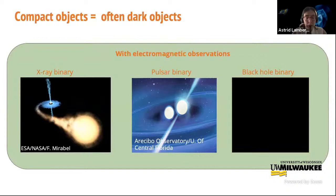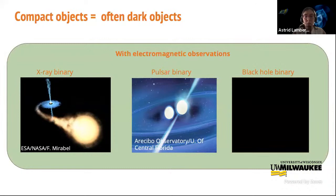Neutron star black hole binaries have been searched for a very long time in the Milky Way with radio searches, because finding one would give us a way to probe the environment of the black hole. However, we have never found such an object. Some X-ray binaries we know of would eventually turn into a neutron star black hole binary, but theoretical models predict they would never be able to merge. So gravitational waves are really a beautiful means to study these objects.